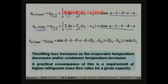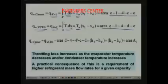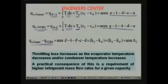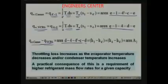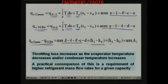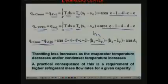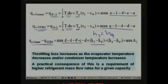The difference between the refrigeration effects — QE_Carnot minus QE_VCC — is nothing but area D4 4 dash CD, which equals H3 minus H4 dash, or H4 minus H4 dash, because H3 equals H4 since this is an isenthalpic expansion process. This is area A2, which we call the throttling loss area.